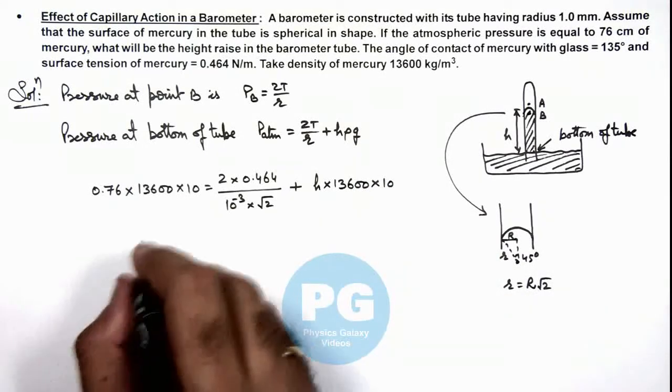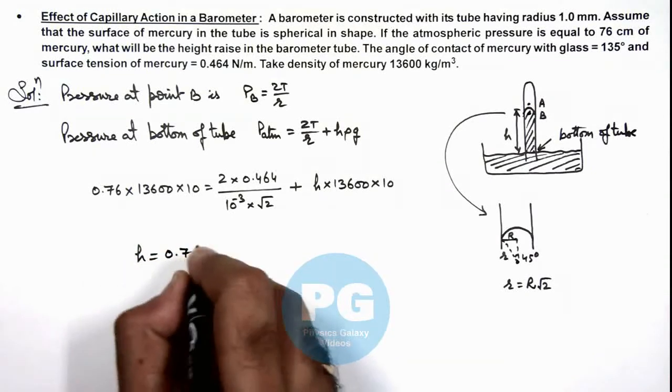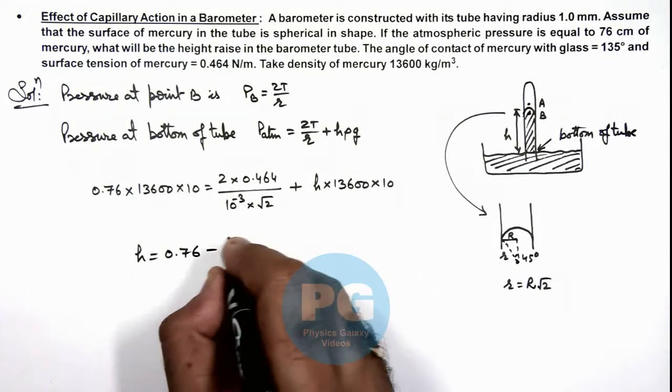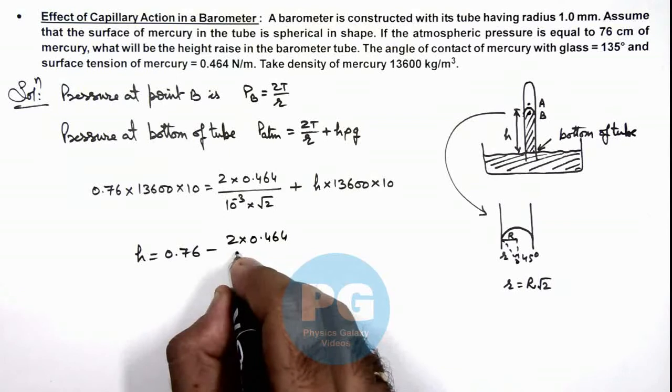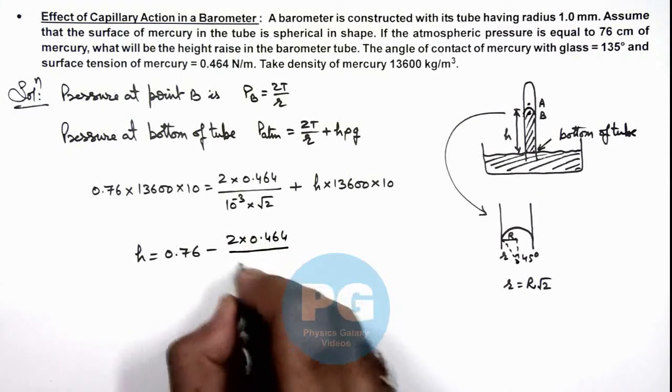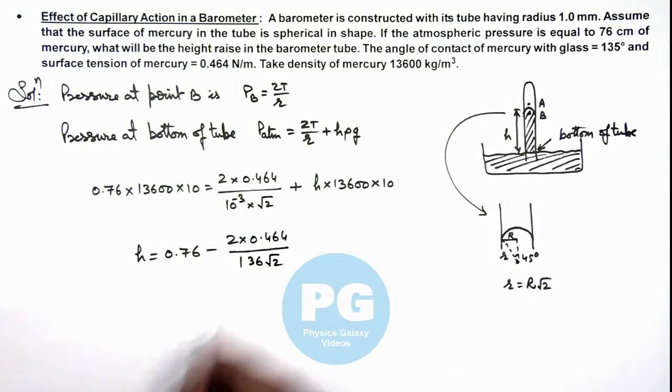If we simplify these values, the value of h we are getting is 0.76 minus 2 into 0.464 divided by 136 root 2. When we numerically simplify these values, it gives us.